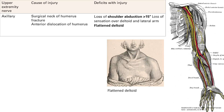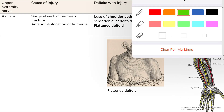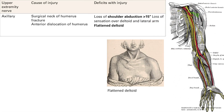Alright, so upper extremity nerve injuries. We're going to start with the axillary nerve. This is not depicted in the picture on the right, but it's pretty much up here in the upper arm. It can get injured by a fracture of the surgical neck of the humerus. So if you have a fracture there, you're going to injure your axillary nerve.